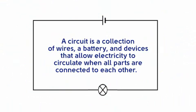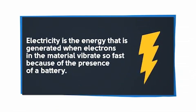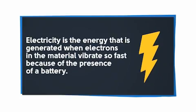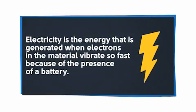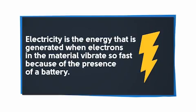A circuit is a collection of wires, a battery, and devices that allow electricity to circulate when all parts are connected to each other. Electricity is the energy that is generated when electrons in the material vibrate so fast because of the presence of a battery.